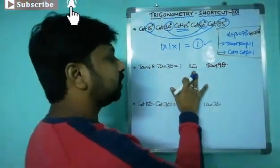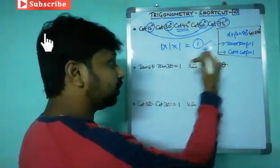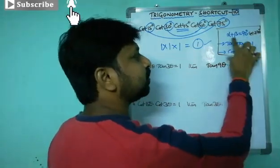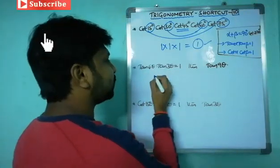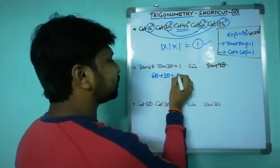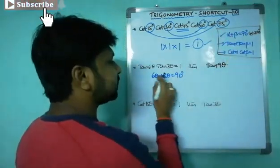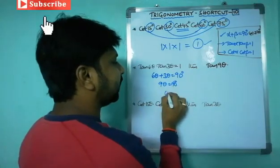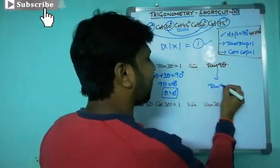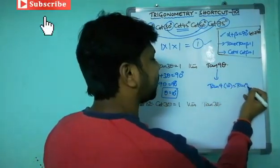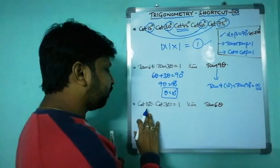Next question: tan 6θ × tan 3θ = 1, find tan 9θ. Using the formula, tan α × tan β = 1 means α + β = 90°. So 6θ + 3θ = 90°, giving 9θ = 90°, therefore θ = 10°. They ask for tan 9θ, which is tan(9 × 10°) = tan 90° = infinite.